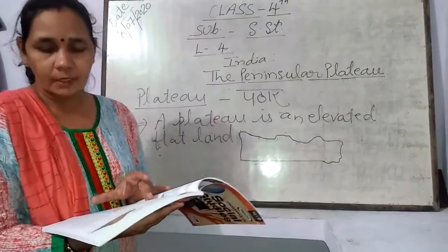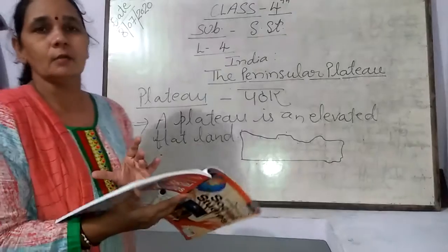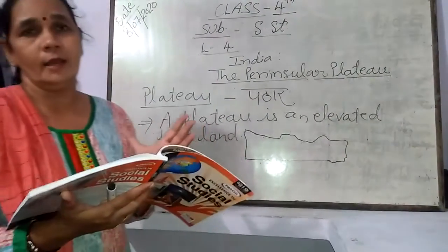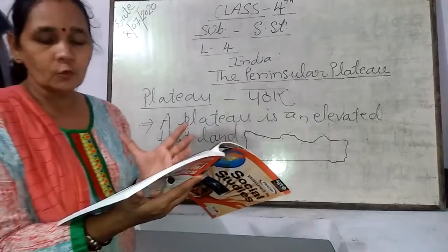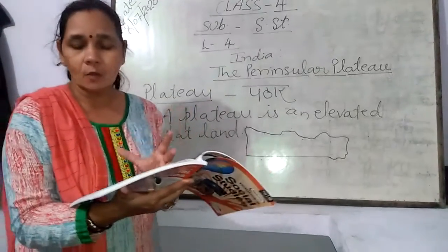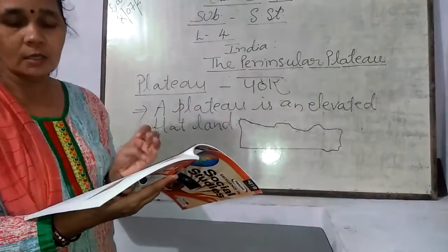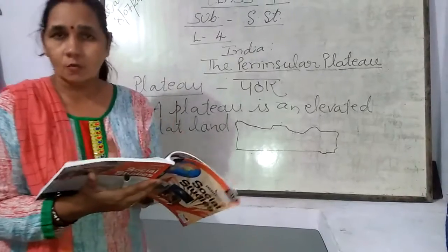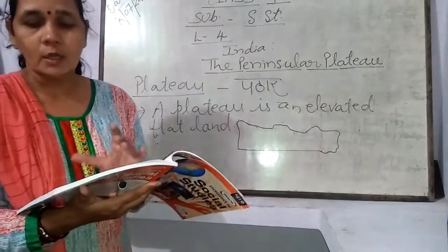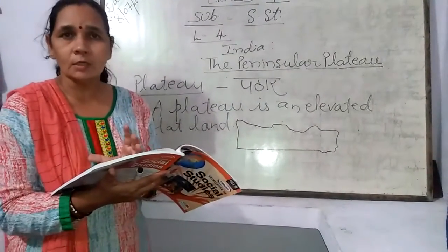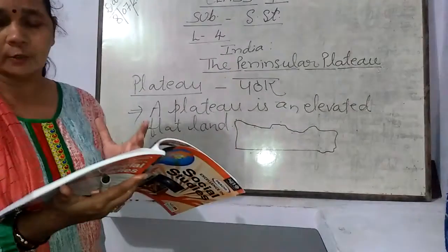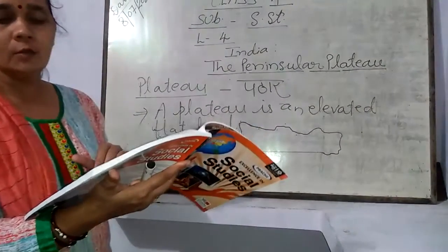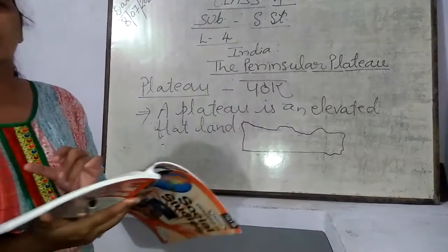The Peninsular Plateau is made up of ancient igneous and metamorphic rocks. The material making up the Peninsular Plateau is igneous and metamorphic rocks. It is the oldest part of the Indian subcontinent.